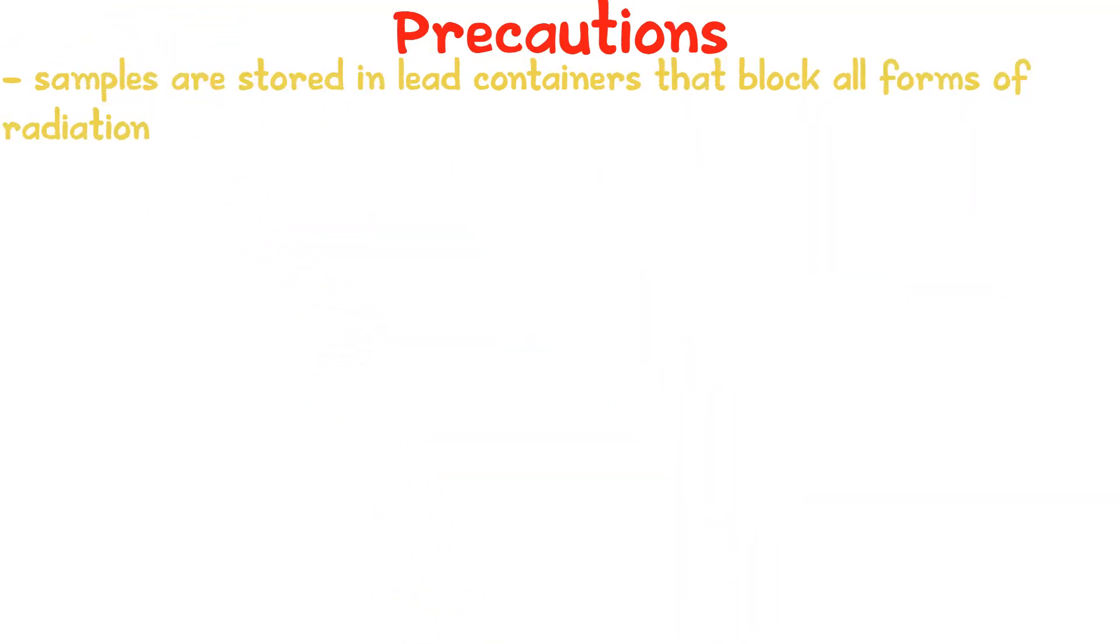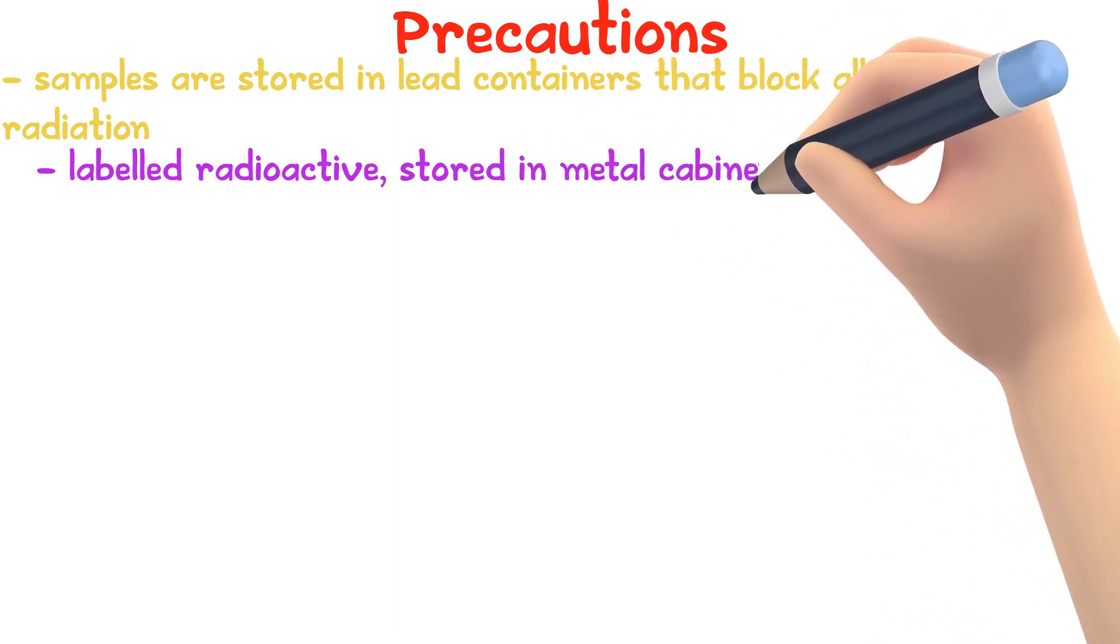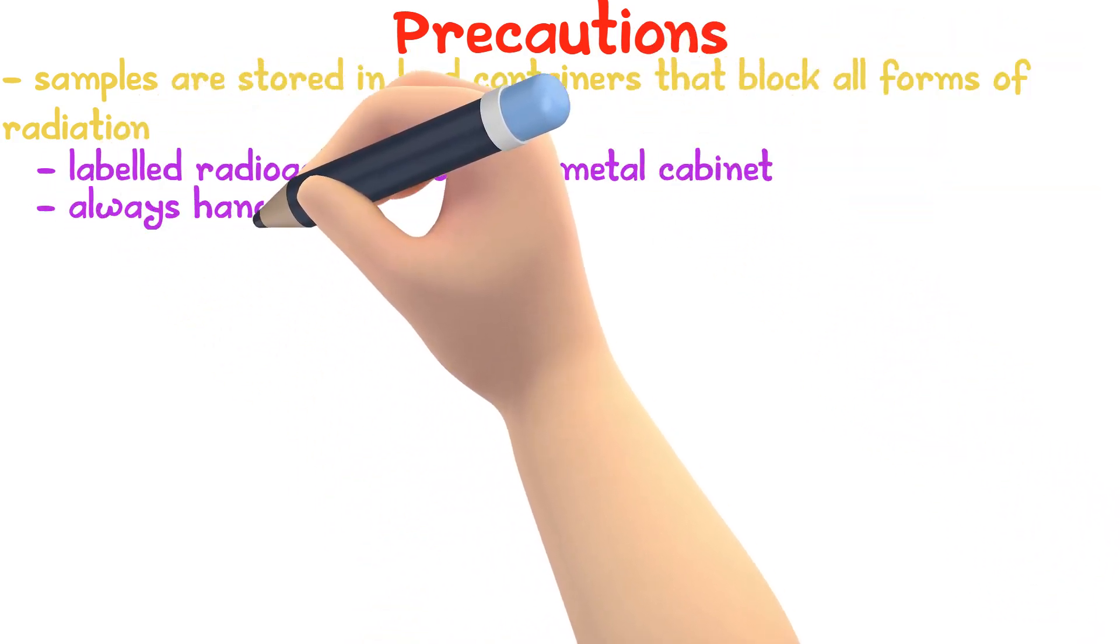These containers are labeled radioactive and are stored in metal cabinets. Samples are always handled with tongs, staying as far away from them as possible.